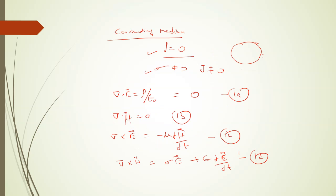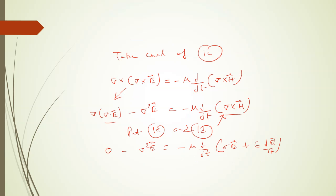This was our equation 1d, sigma E plus epsilon curly E by curly t. Minus signs cancel out.